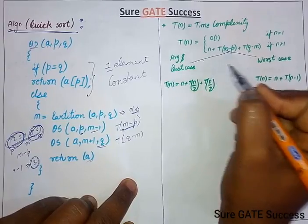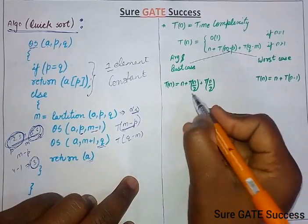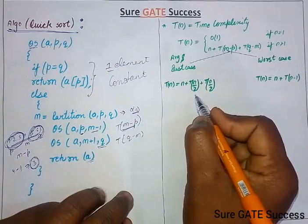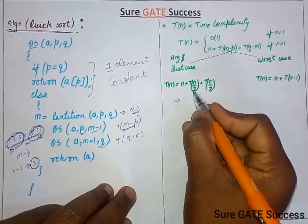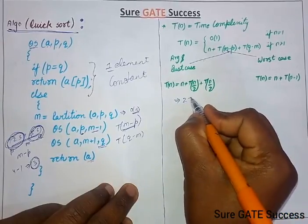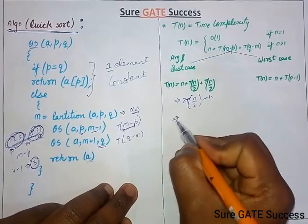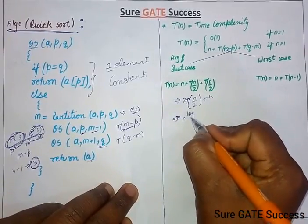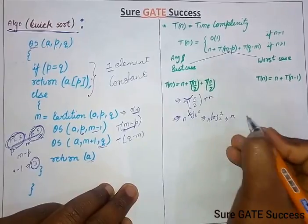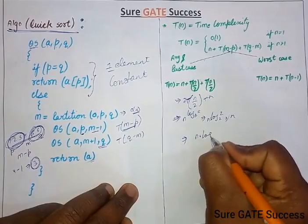There are two cases. For the best and average case, if the array is divided such that half is on one side and half on the other — equal parts — the recurrence is T(n) = 2T(n/2) + n. Solving using the master theorem: n log base 2 of 2 equals n, so since the cost equals the split, we multiply by log n, giving a time complexity of n log n.